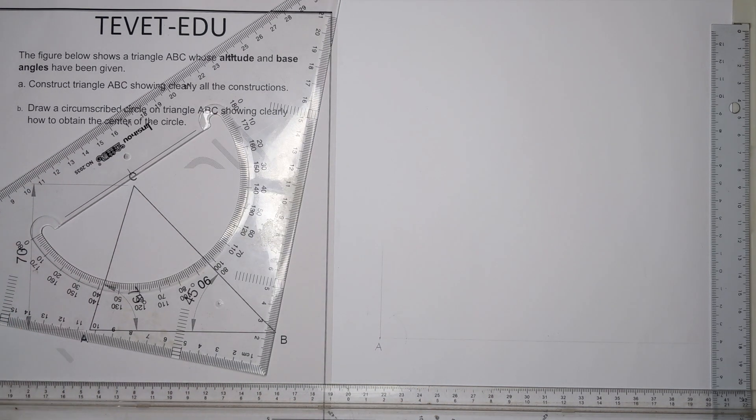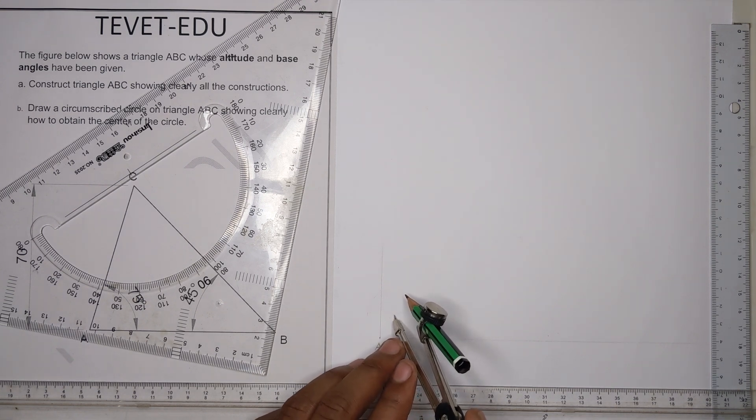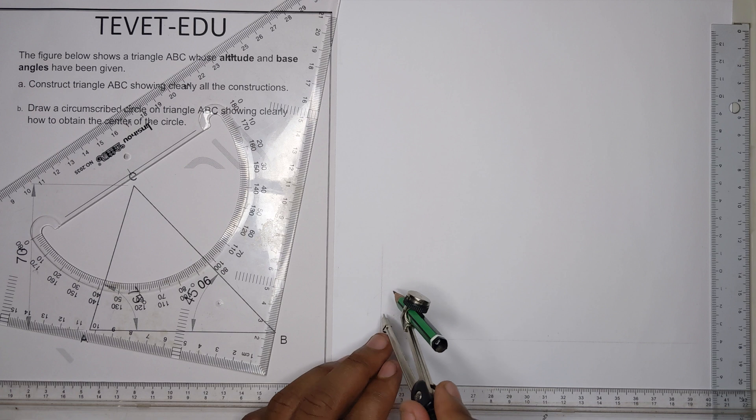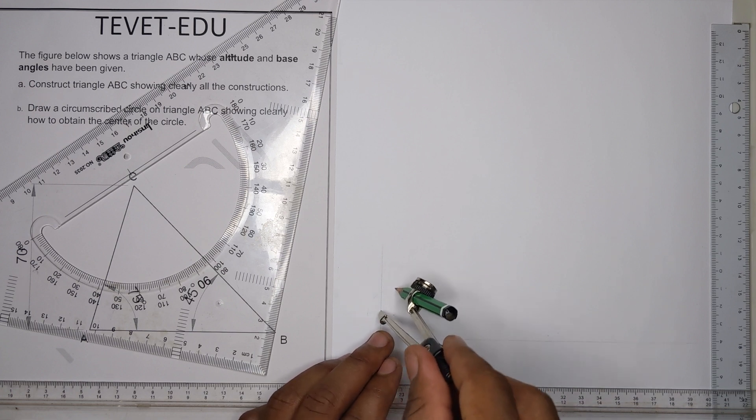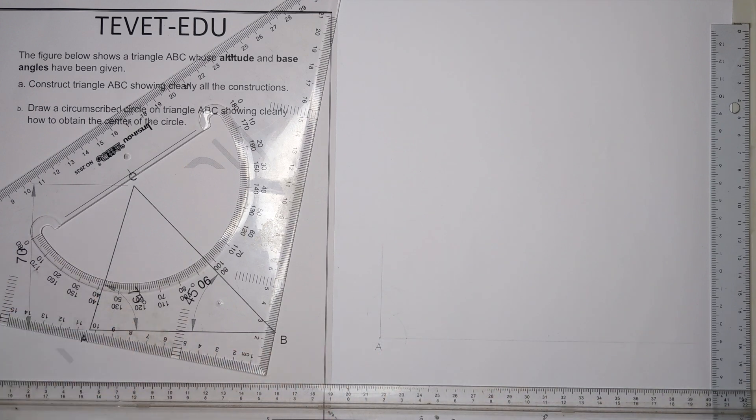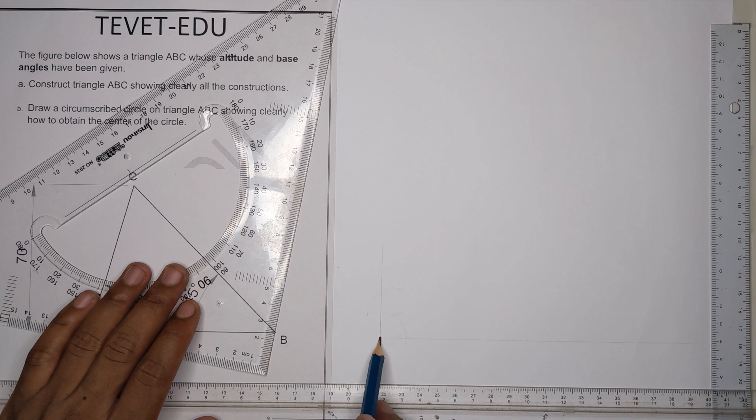Then you bisect the 90 degrees so that you come up with 75. From there we have our 75 and then you draw a line at angle 75. This is your 75.